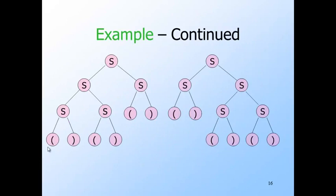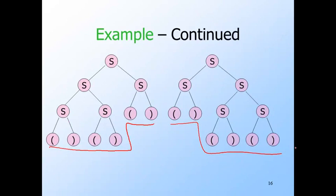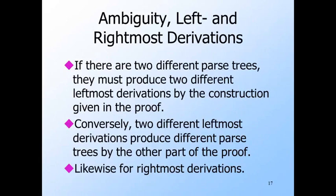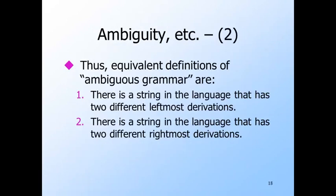Notice that each of these trees has the same yield — three pairs of left and right parentheses — but they are evidently not the same tree. The first replaces the first child of the root by SS, and the second does the same but with the second child. Since parse trees and leftmost derivations correspond one-to-one, we could also define a grammar as ambiguous if it has a string with two different leftmost derivations or two different rightmost derivations.